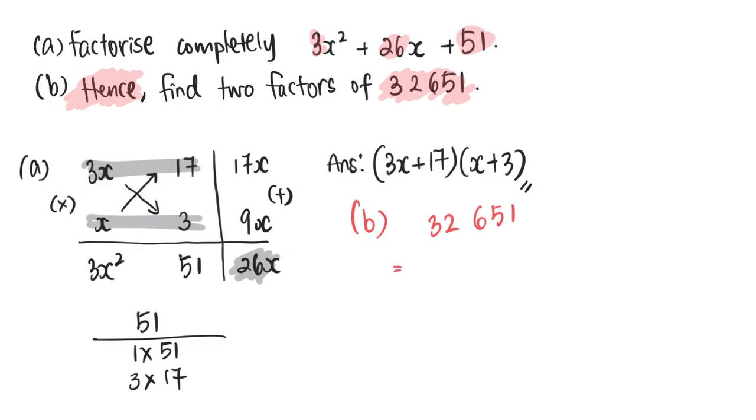I'm going to rewrite this as 30,000 plus 2,600 plus 51.